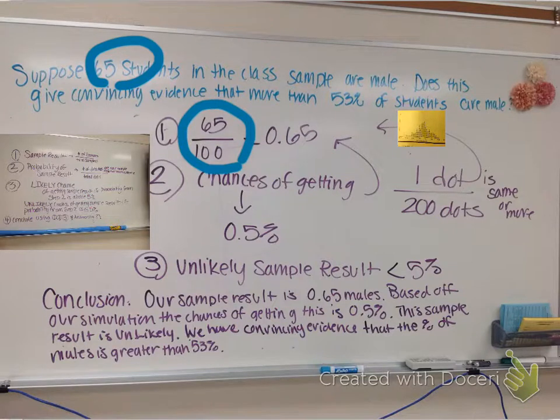I take the number of successes, male divided by 100. That gives me .65. In class, then I said, you take that now to your, I pretended we were statisticians. We take it to the dean and we say, hey, we think that the truth 53% of students is wrong. And he says, well, it could just be variation. What are the chances of getting this 65%?